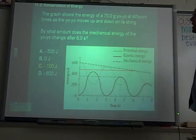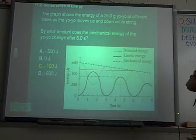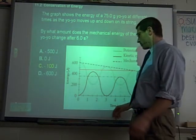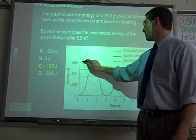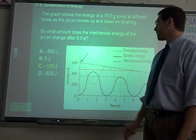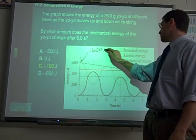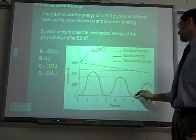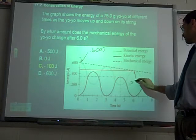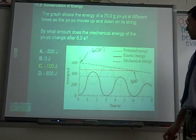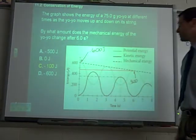The first question asks by what amount does the mechanical energy of the yo-yo change after six seconds. For this question, all you need to do is see that at the beginning the mechanical energy is 0.600 joules, and at about six seconds the mechanical energy is right around 0.500 joules. So the difference is negative 0.100 joules.